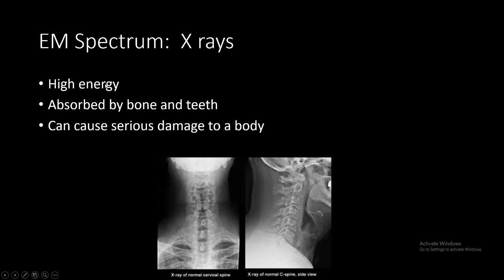X-rays carry even more energy than ultraviolet waves. They're absorbed by bone and teeth and can cause serious damage to the body — that's why when you go to the dentist or doctor for an x-ray, they place a lead vest over you and the technician leaves the room and goes behind a wall. The reason your bones and teeth are visible on an x-ray is because they're dense enough that the x-rays can't fully penetrate them, so they're reflected in the image.